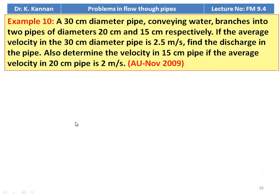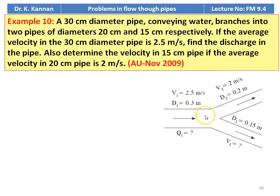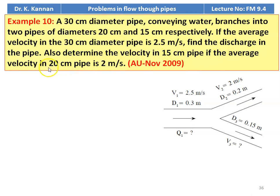Example number 10 from November 2009 question paper. A 30 centimeter diameter pipe conveying water branches into two pipes of diameter 20 centimeter and 15 centimeter respectively. Diameter D1 = 0.3 m with velocity 2.5 m/s; it branches into D2 = 0.2 m with velocity 2 m/s, and D3 = 0.15 m with unknown velocity. Find the discharge in the pipe and determine the velocity in the 15 centimeter pipe.